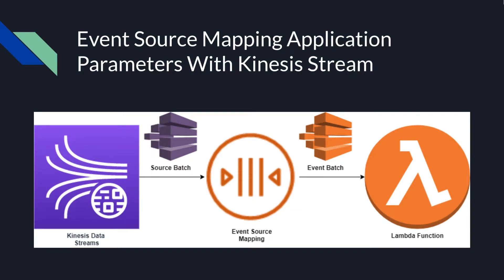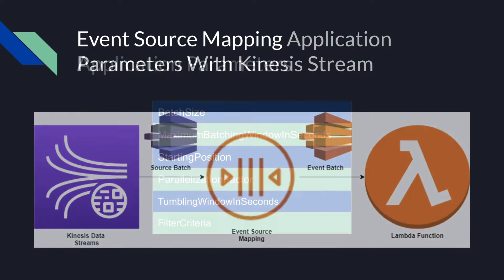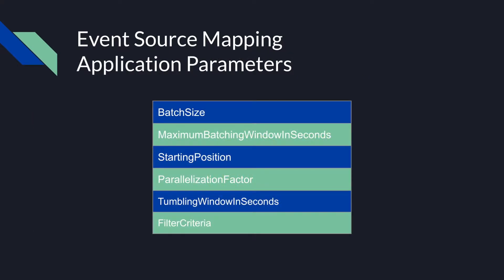Hello my friends. In the second part of the Kinesis with Lambda tutorial, we're going to learn what event source mapping is and the different event source mapping parameters for consuming a Kinesis stream. The event source mapping will read batches of records from the stream and invoke your Lambda function, handling the polling, checkpointing, and error handling complexities so you can focus on your business logic. A good understanding of these parameters will help you improve performance and error handling.